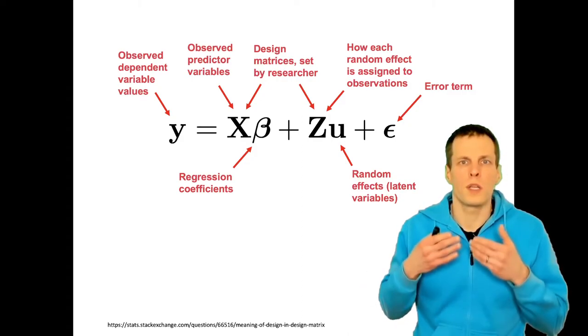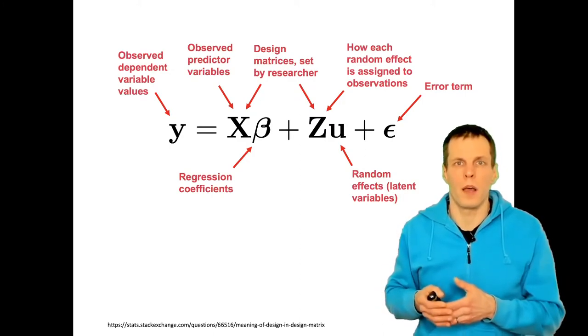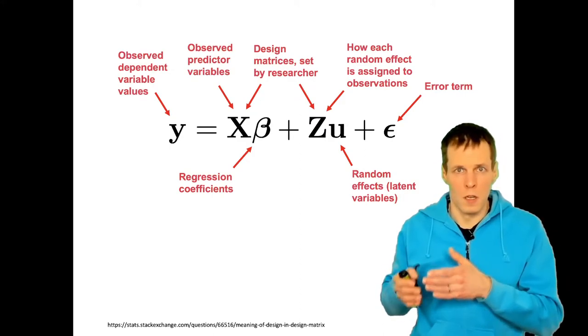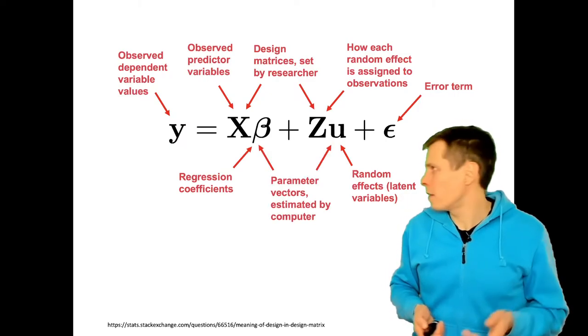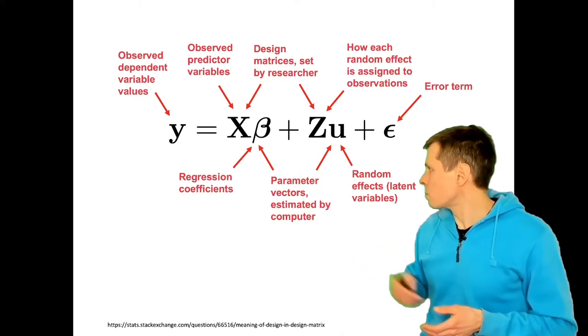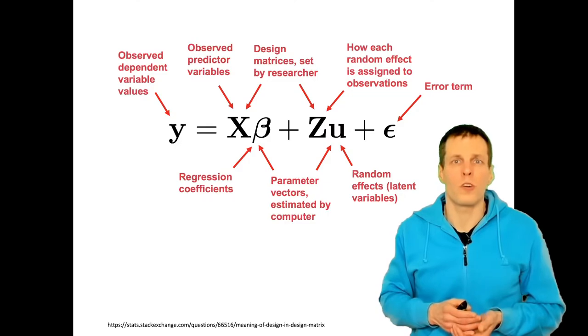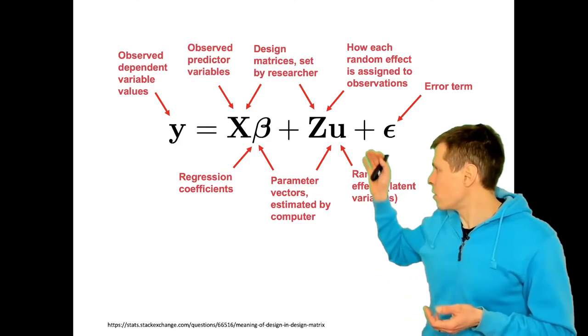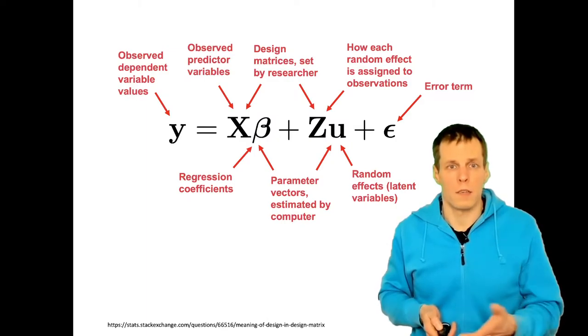The reason they're called design matrices is a bit historical and originates from applying regression analysis to data from experimental designs. These β and u are parameter vectors estimated by a computer. We don't actually estimate u directly, but instead we estimate the variances of these random effects.